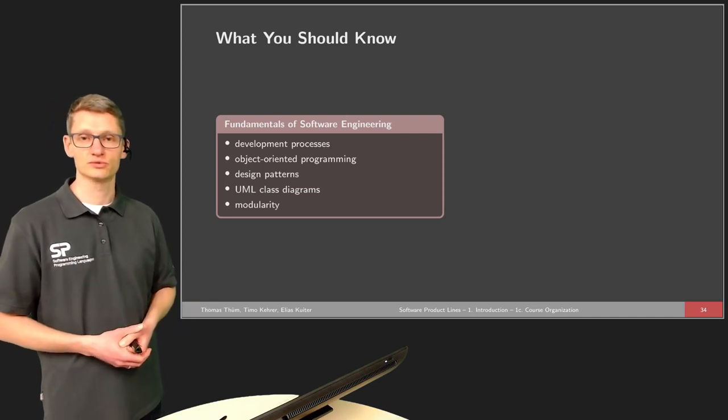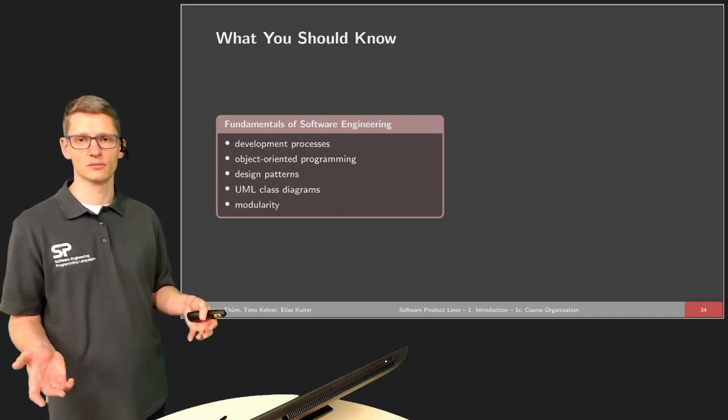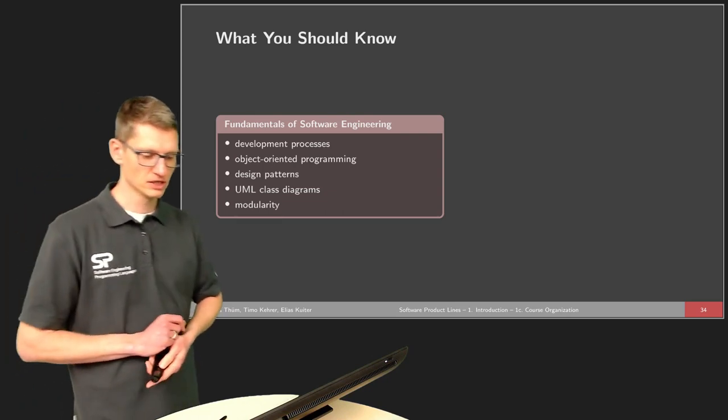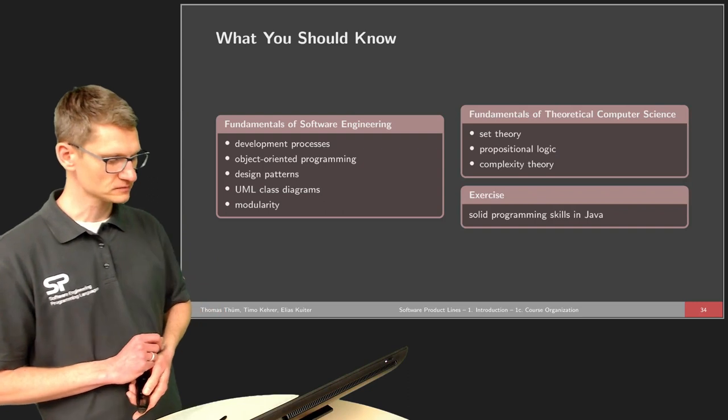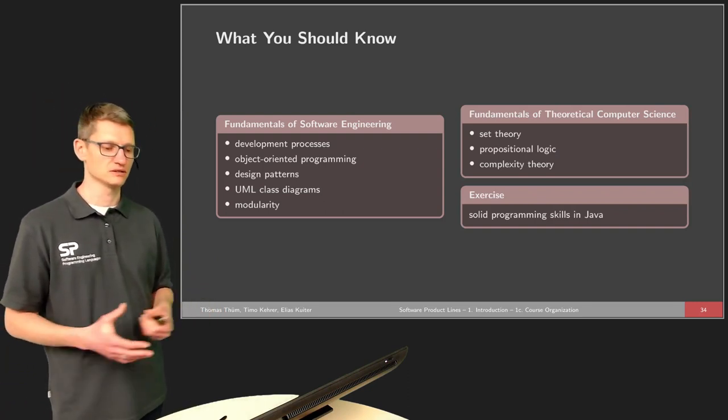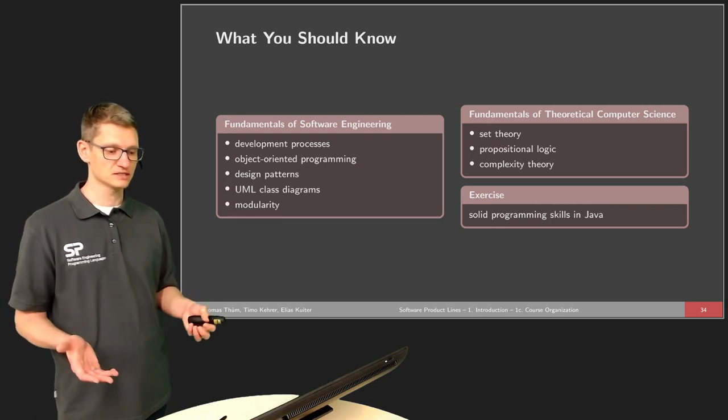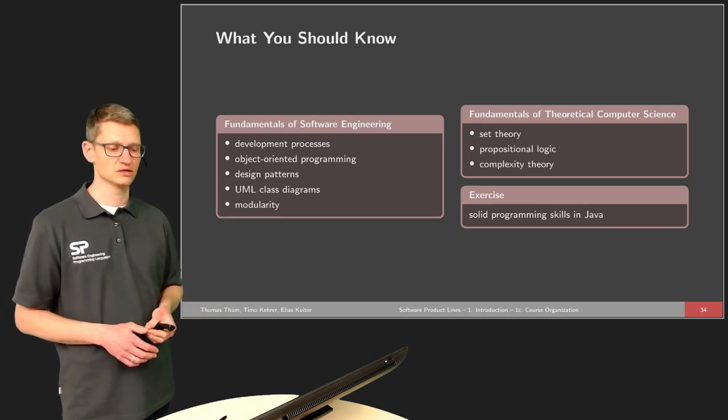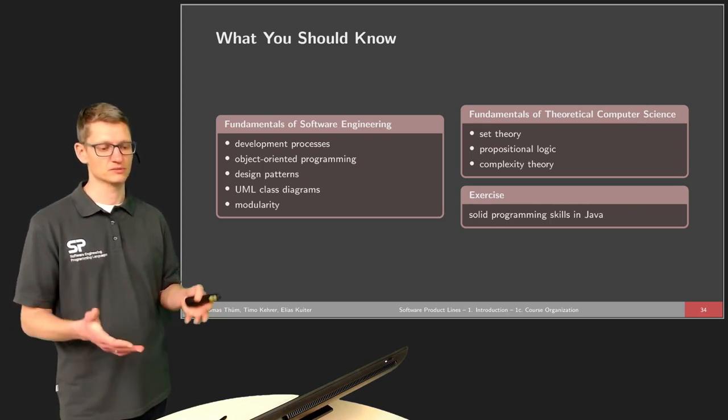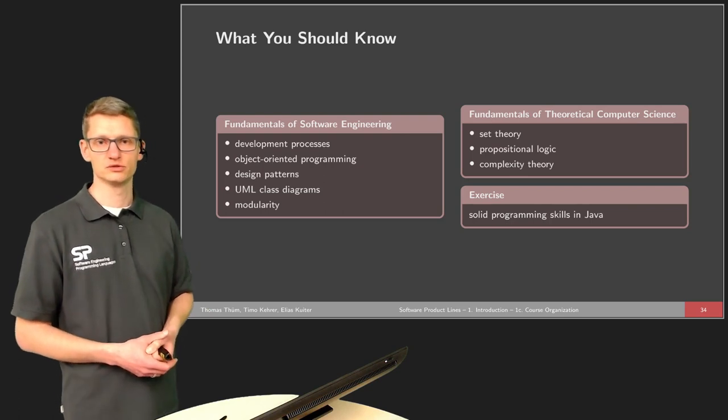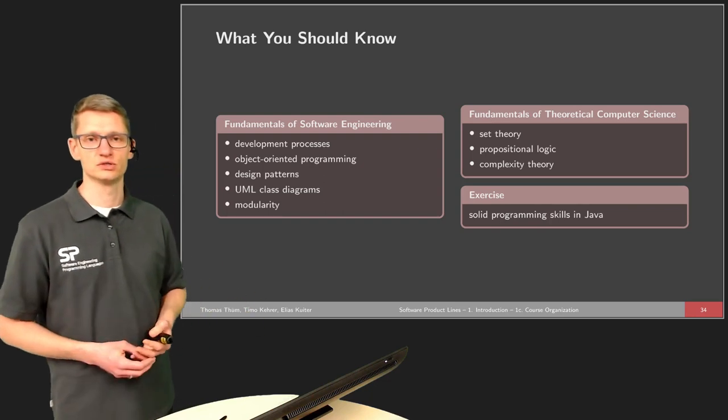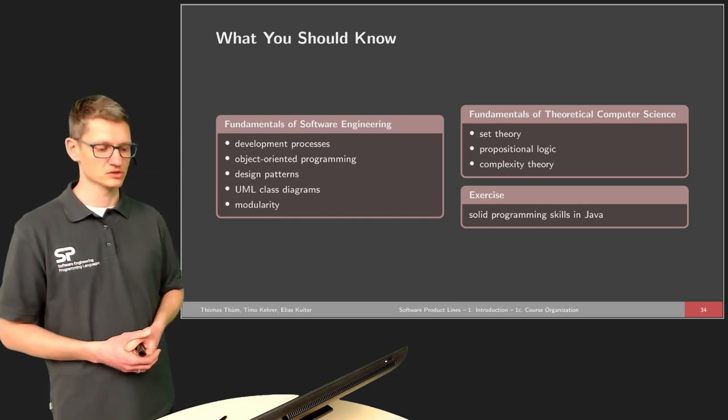For instance, if you think of object-oriented programming but also of components, we will introduce some concepts, but it would be good if you could have a rough understanding already. Then there are also fundamentals of theoretical computer science that we build in and mathematics, like set theory, propositional logic, complexity theory. Propositional logic will be used to describe what are the valid combinations of features. So we will actually use and build on this and also set theory.